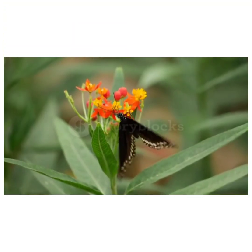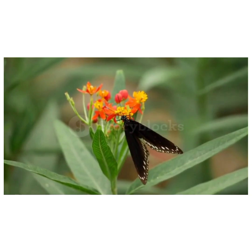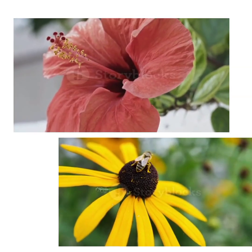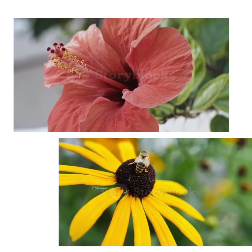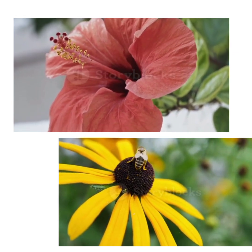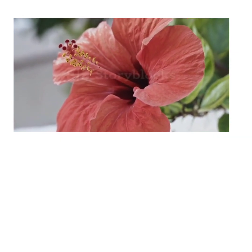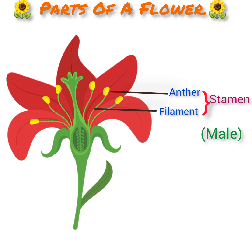Pollination is carried out by either wind or insects. Each type of flower is unique in terms of color, fragrance, shape, and size. The stamen is the male part of the flower, which is made up of the anther and the filament.